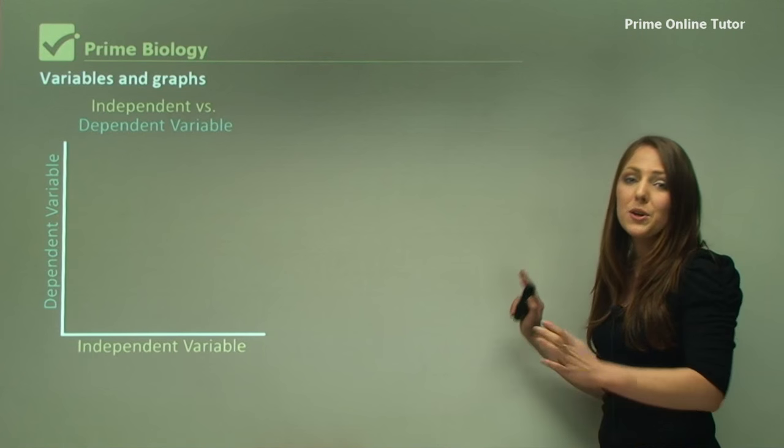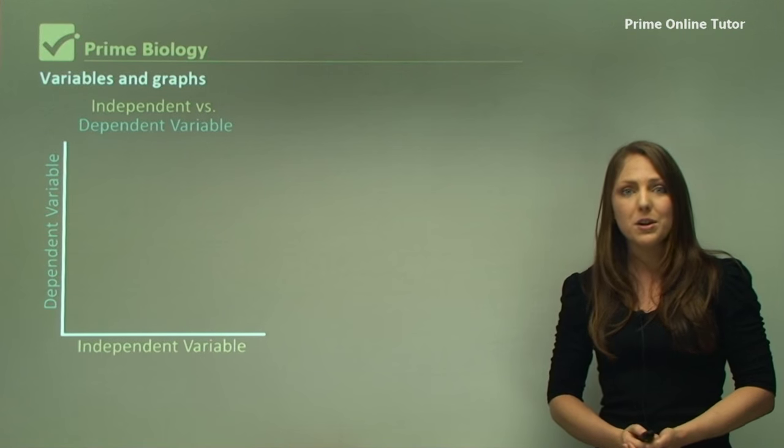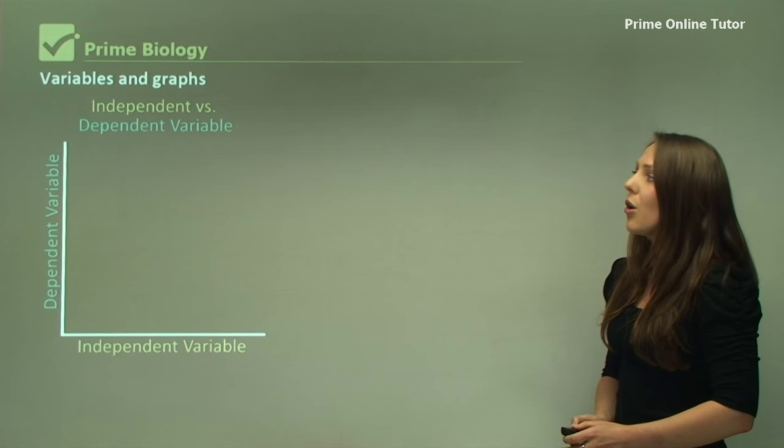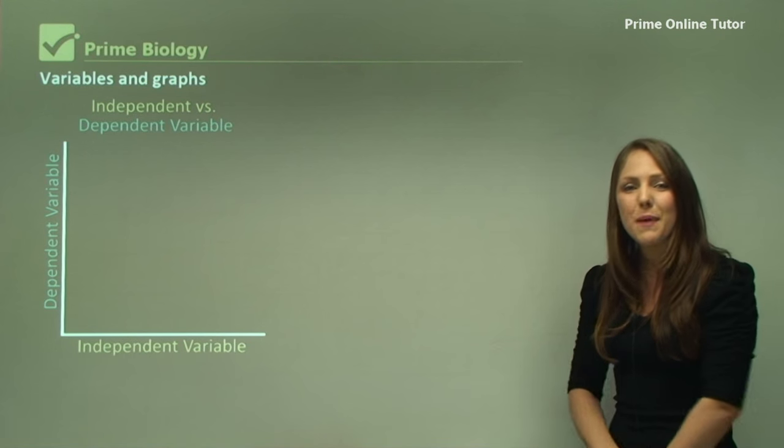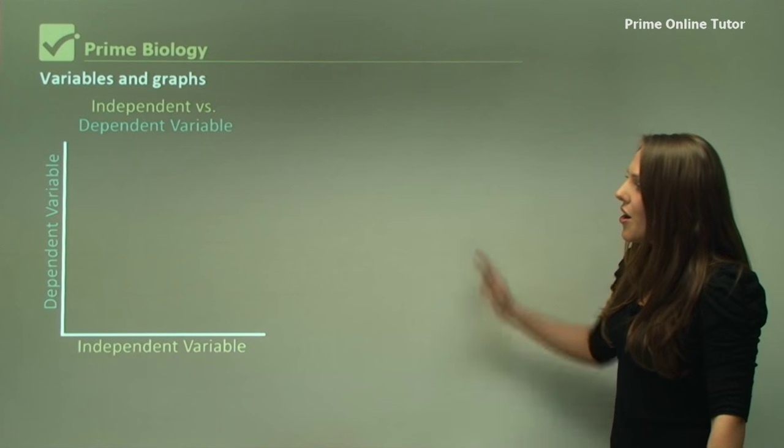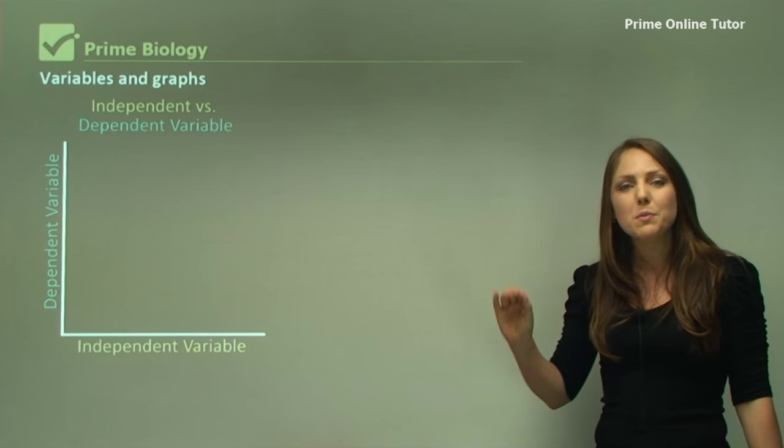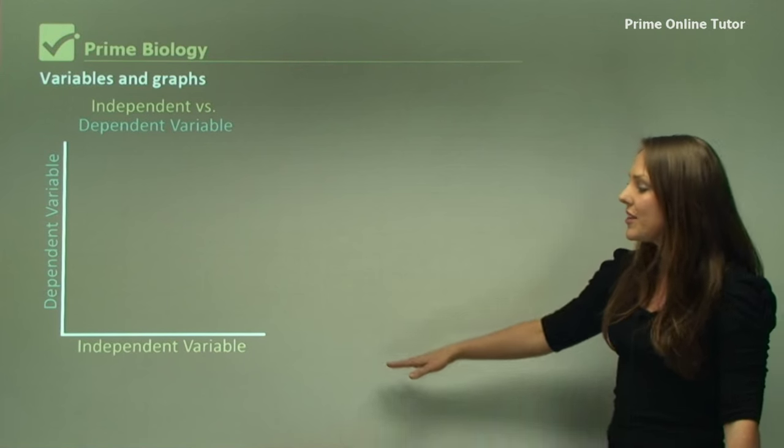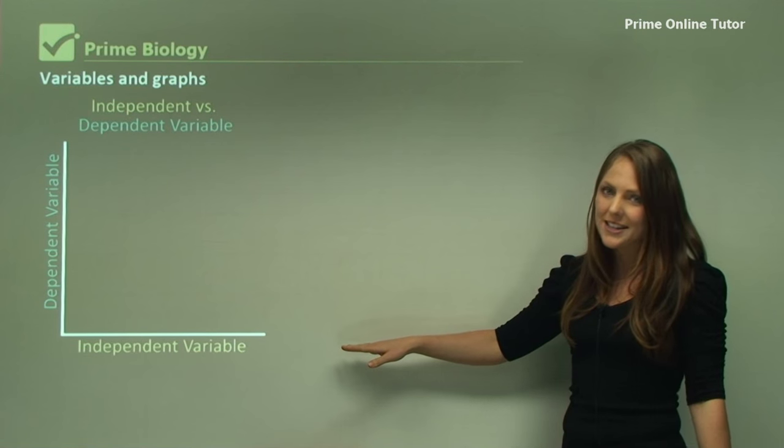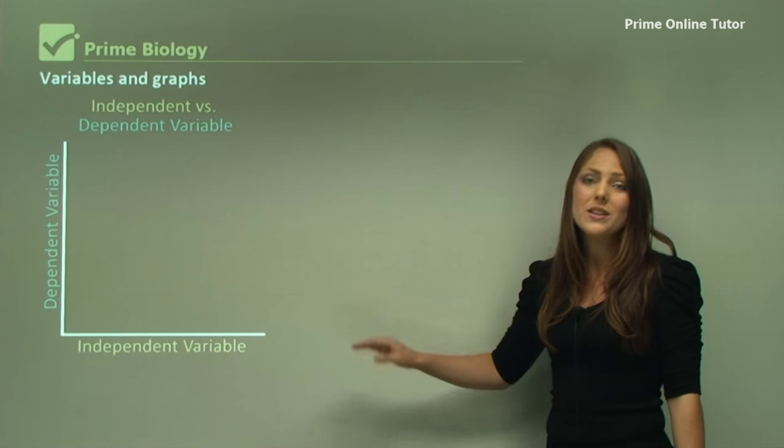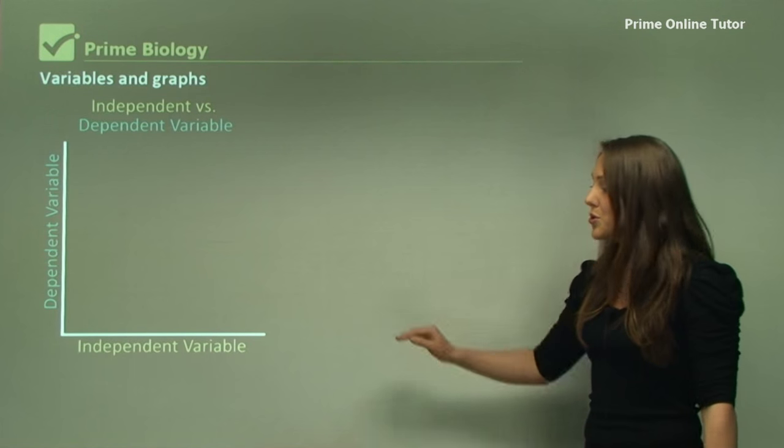Now here is a typical graph of how to draw variables with graphs. Obviously, the title must include both the independent and dependent variable. On the vertical axis, also known as the y-axis, it's always the dependent variable. And on the x-axis, the horizontal axis, the independent variable is always placed on the bottom there because you control it.